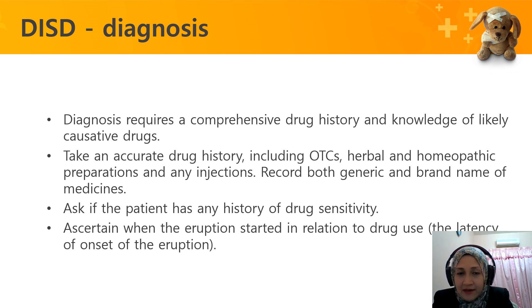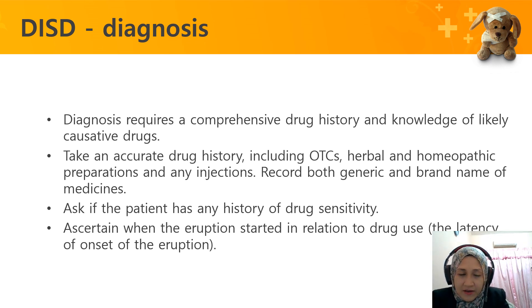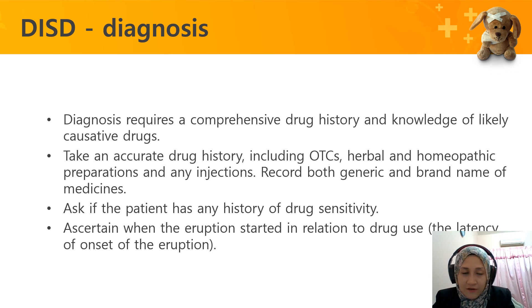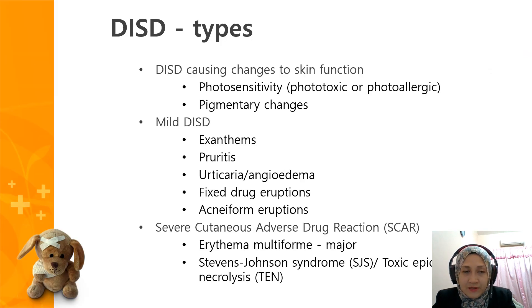We have to take an accurate drug history including OTC use, any herbal or homeopathic preparations, or any injections, and record both the generic and brand name of the medication. Ask if the patient had any history of drug sensitivity and ascertain when the eruption started in relation to drug use — the timing or duration between starting the drug and onset of the skin presentation.